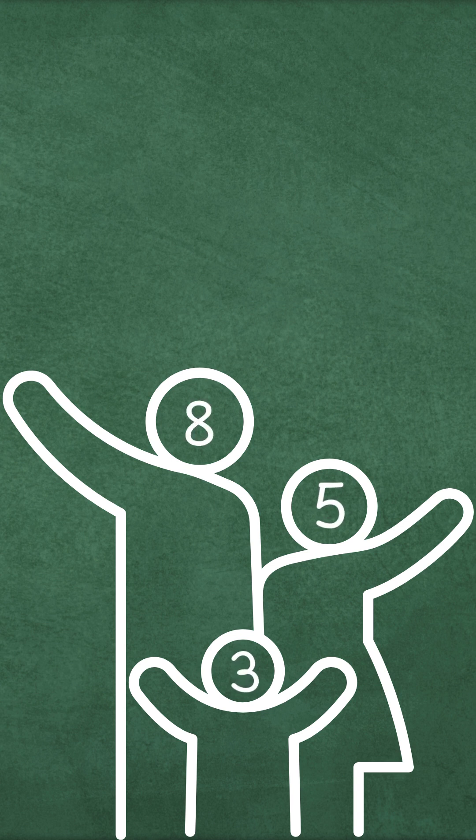Let's take 3, 5, and 8. These numbers are a family because they work together in addition and subtraction.